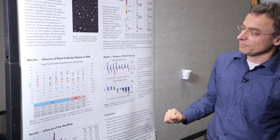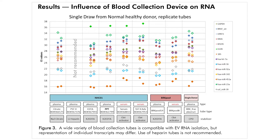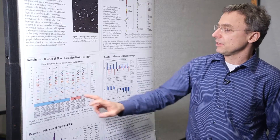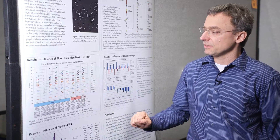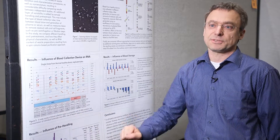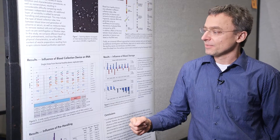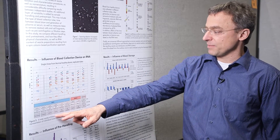The first thing we checked is how different blood collection tubes with different anticoagulants or serum tubes with clot activators affect our RNA yields. It works with all of these — we always get nice RNA signals. The one thing we do not recommend is heparin, because heparin essentially kills all enzymatic reactions and is very difficult to get rid of, so avoid it if you can.